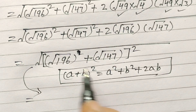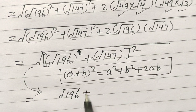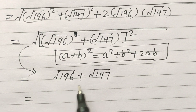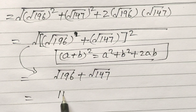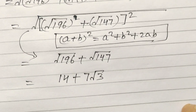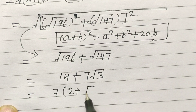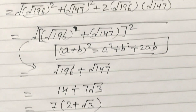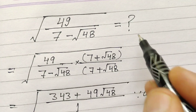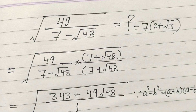Now, square root of 196 plus square root of 147 equals 14 plus 7 square root of 3. If we take 7 as common, we get 7 times 2 plus square root of 3. So the final answer is 7 times open bracket 2 plus square root of 3 close bracket. Thank you friends.